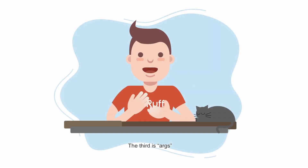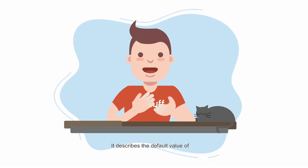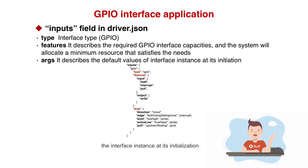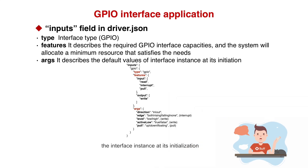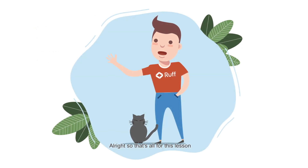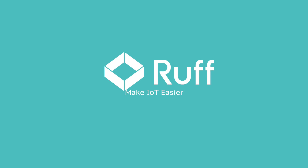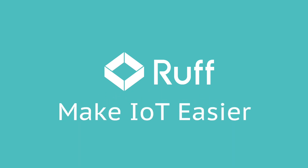The third field is arcs, which describes the default value of the interface instance at initialization. The default values include a direction value, an output level, and active load. That's all for this lesson. Please look forward to our upcoming classes on Ruff. Thank you very much. Ruff makes IoT easier.